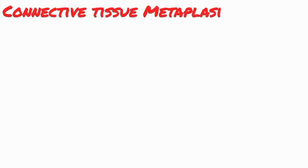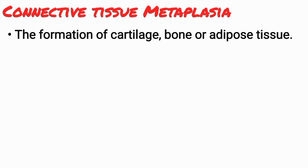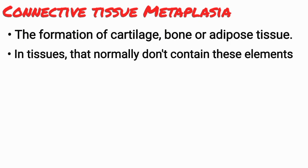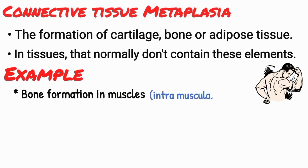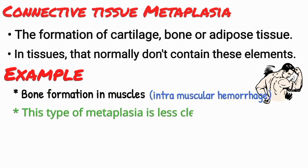Connective tissue metaplasia is the formation of cartilage, bone, or adipose tissue in tissues that normally do not contain these elements. For example, bone formation in muscles occasionally occurs after intramuscular hemorrhage. This type of metaplasia is less clearly seen as an adaptive response.